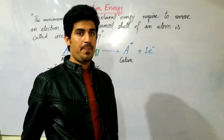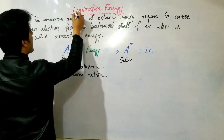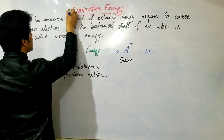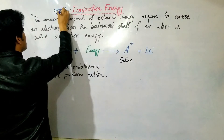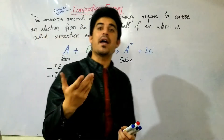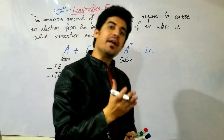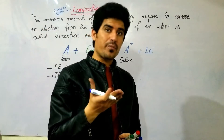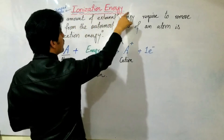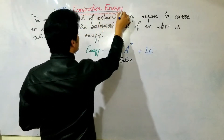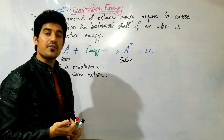Ionization energy — the word itself tells us: 'ion' means any charged species. Any atom or species that has a positive or negative charge is called an ion. 'Ionization' means the formation of ions. And the energy required for this ionization is called ionization energy — ion formation energy.